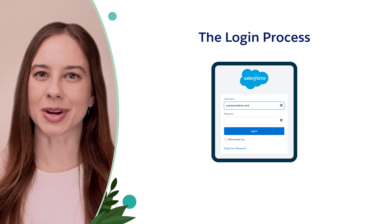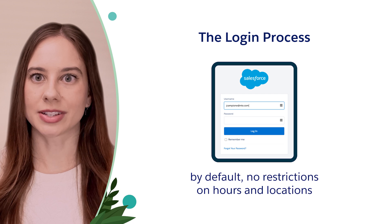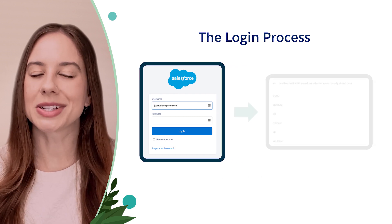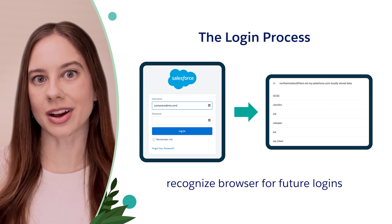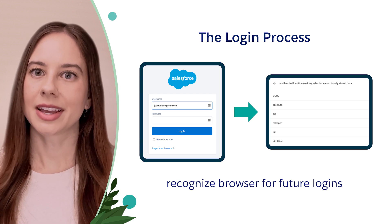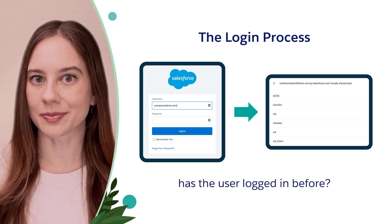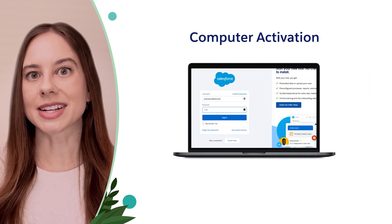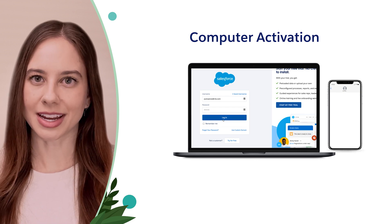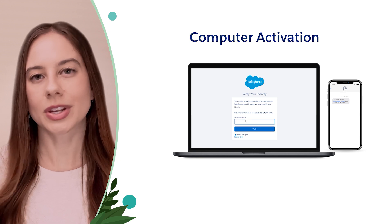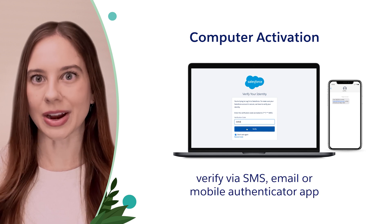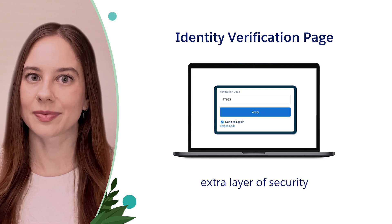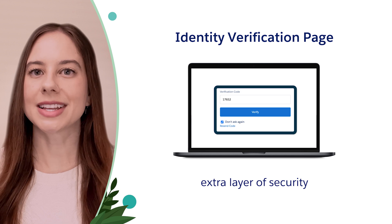Next, let's see how the login process works. As a default, there are no restrictions on hours or locations of login. When a user successfully logs into Salesforce, Salesforce places a cookie in their browser, which is used to recognize that browser for future logins. As a user starts the login process, Salesforce looks to see if they've logged in from this browser before. If they haven't, the user must activate that computer. When prompted to activate, Salesforce selects the highest priority method available to verify their identity, like a text message. The verification code can also be delivered via email or a mobile authenticator app. Identity confirmation is that extra layer of security to verify the user's identity. Once the user verifies, the device and client browser is considered activated.